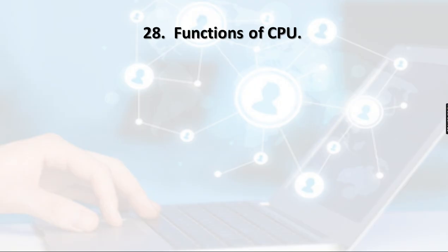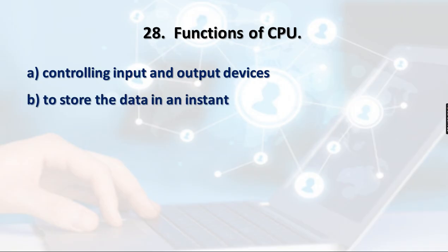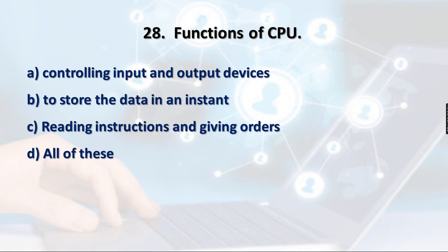Question 28: What are the functions of the CPU? Option A: Controlling input and output devices, Option B: Storing data in an instant, Option C: Reading instructions and giving orders, Option D: All of the above. The CPU performs all three of these functions — controlling I/O devices, storing data instantly, and reading instructions and giving orders. So option D is the right answer.